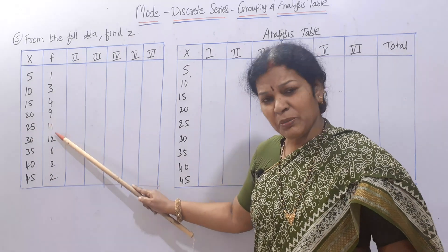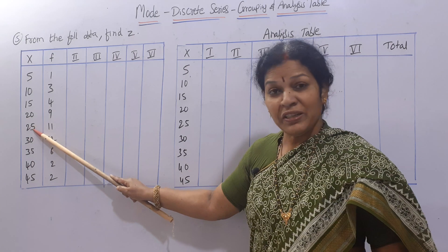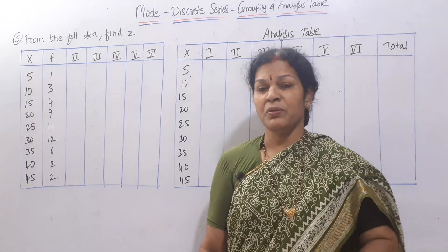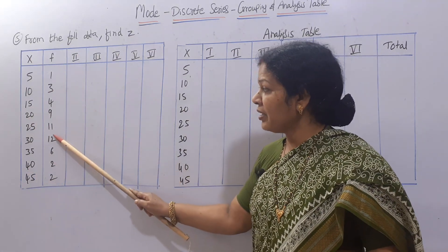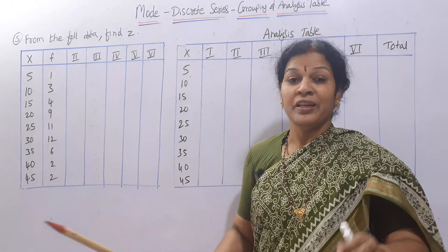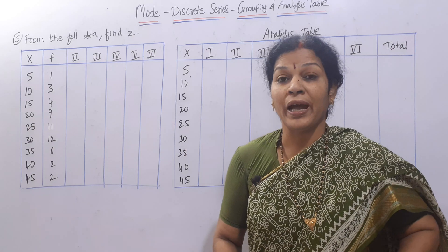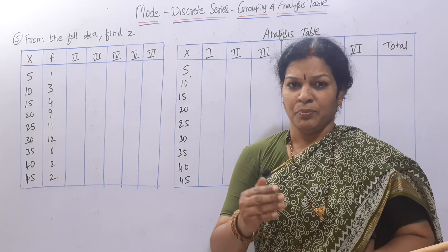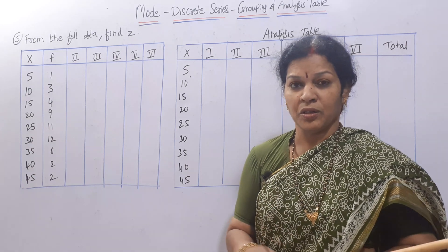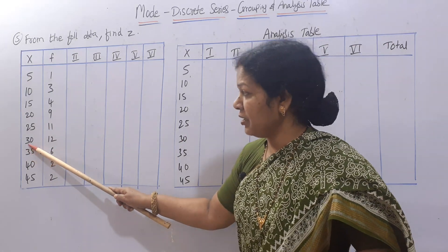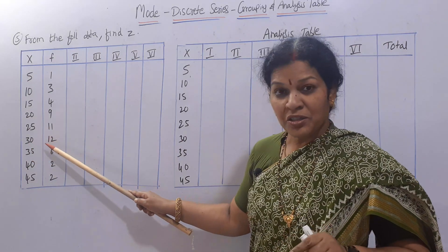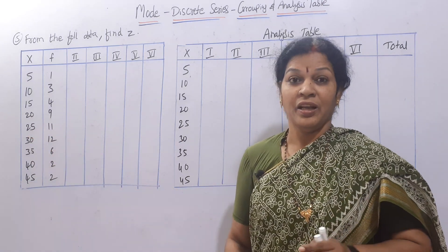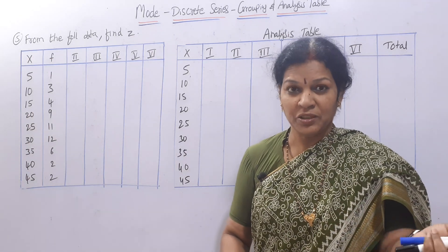Not only that — 25 is also repeating 11 times, and 30 is repeating 12 times. So in such cases you can't simply say mode lies in 30, because the concentration of the 25 value is also very near to 30. Hence, by inspection, we cannot say mode lies in 30 because the concentration of 25 is also near to 30.